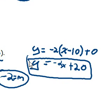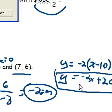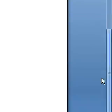This is the equation of the line that contains the two points, ten, comma, zero and seven, comma, six. Was that the last one? Say it ain't so. Yep, it was the last one.